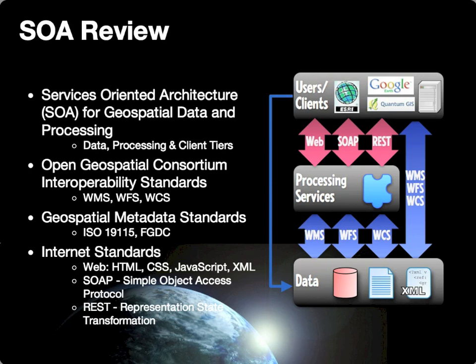Returning to the concept of our geospatial services-oriented architecture, we can review the components we have worked with thus far. Focusing first on the users and client tier, where they are using internet standards provided by the Open Geospatial Consortium, web standards including HTML, CSS, and JavaScript. Documentation about services is provided by XML, with interaction with remote servers such as Google Maps or the OpenLayers JavaScript framework to provide interactive mapping clients through web browsers.